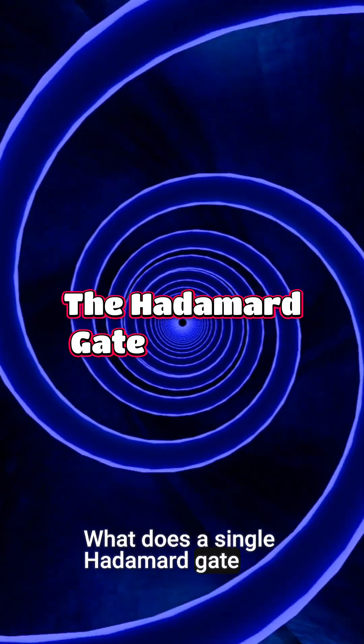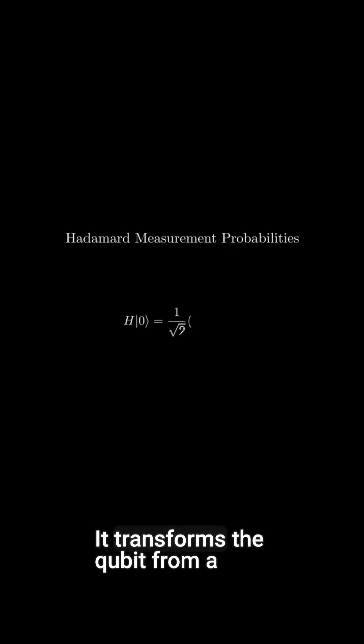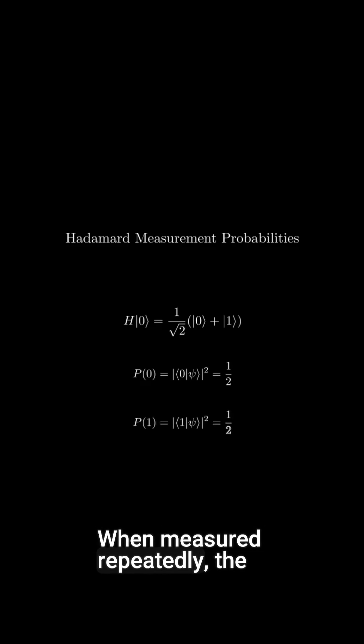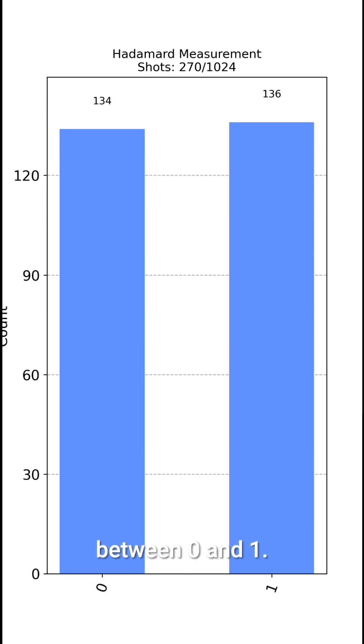What does a single Hadamard gate actually do? It transforms the qubit from a definite state into an equal superposition of 0 and 1. When measured repeatedly, the outcomes appear random but evenly distributed between 0 and 1.